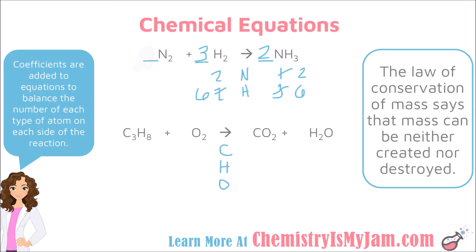For the second example, list the atoms present beneath the arrow. There are three carbons on the left and one on the right, eight hydrogens on the left and two on the right, and two oxygens on the left with three on the right. A useful strategy: whenever an atom appears in two places on one side of the reaction, tackle that atom last. For combustion reactions, start with carbons, then hydrogens, and take care of oxygens last.